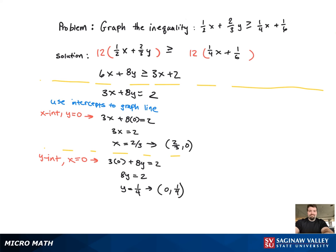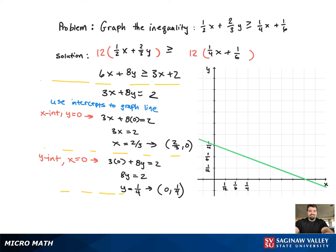Now with two points, we can graph. Since it's greater than or equal to the inequality symbol, that means it's going to be a solid line. So we're good with the solid line.